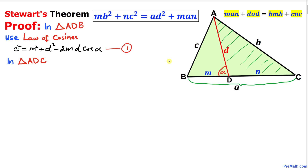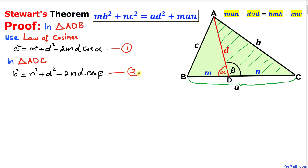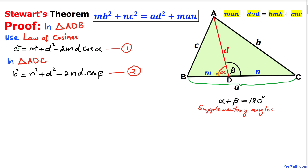Now let's focus on triangle ADC and apply the law of cosines again. Let's call angle ADC as beta. Then the law of cosines gives us: b² = n² + d² − 2nd·cos(β). Let's call this equation number two.